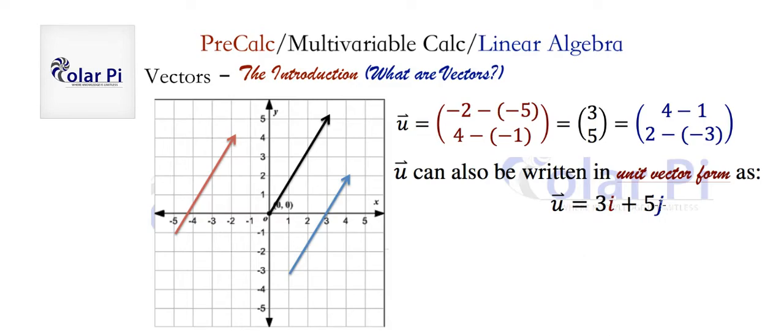By definition, i and j are unit vectors in the x and y direction. We can represent the vector u as 3i plus 5j in what's called unit vector form. I'll dedicate a video to unit vector form, so don't sweat that right now.